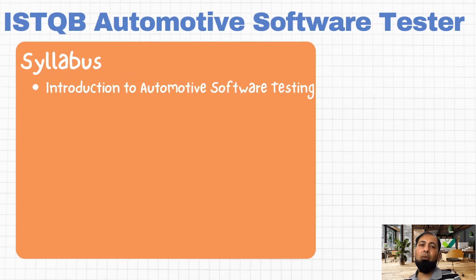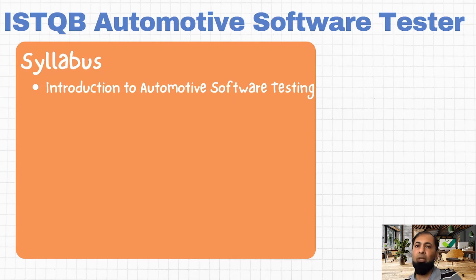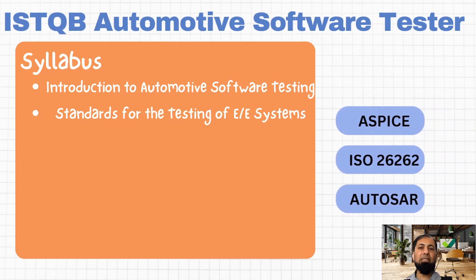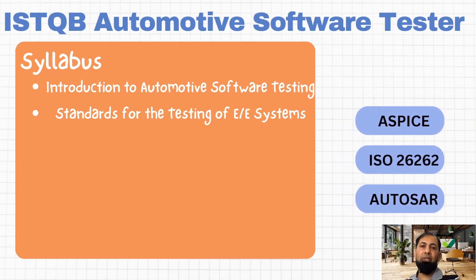Let's have a look at the content of this certification. The whole syllabus can be divided into four different parts. The first section is about introduction to automotive software testing. The next section is about the standards for the testing of electric and electronic systems. There are three main standards covered: ASPICE, ISO 26262, and AutoSAR.